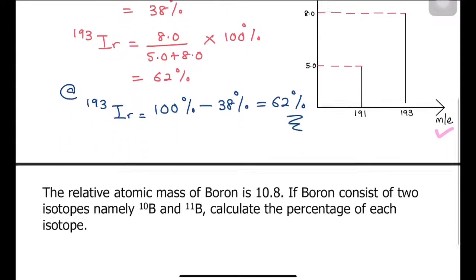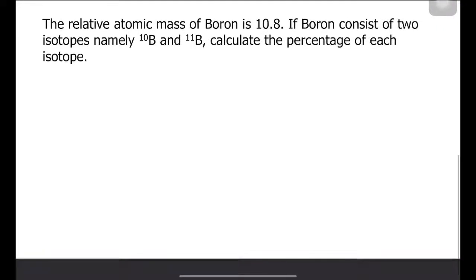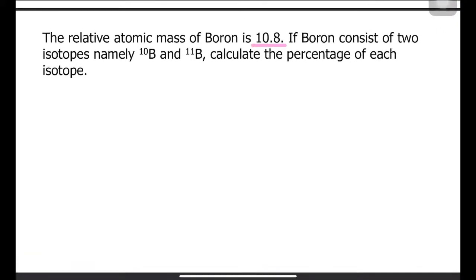Next, moving on to the second question, here we have the relative atomic mass of boron to be 10.8 and if boron consists of two isotopes, namely boron 10 and boron 11, you are required to calculate the percentage abundance of each isotope.